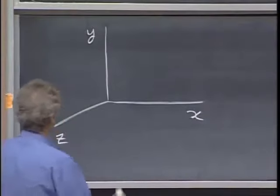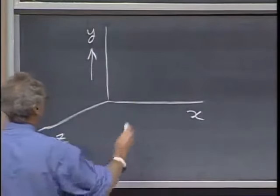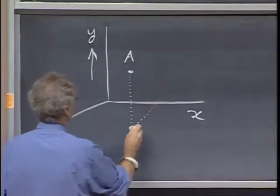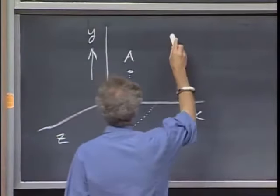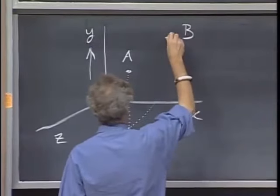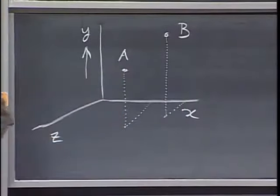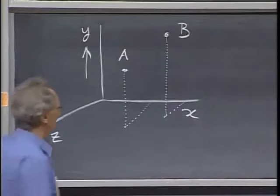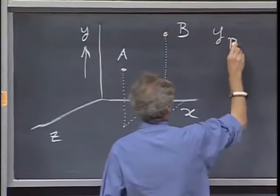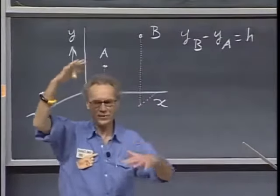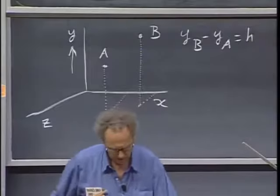And there is here, this is the increasing value of y. And there's here point A in three dimensions, and there is here point B. So you get a rough idea about the three dimensions. And y of B minus y of A equals h. That's a given. So there's a height difference between A and between B.